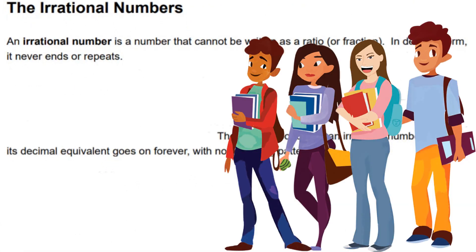An irrational number is a number that cannot be written as a ratio or fraction. In decimal form, it never ends or repeats. The square root of 2 is an irrational number, meaning its decimal equivalence goes on forever with no repeating pattern.